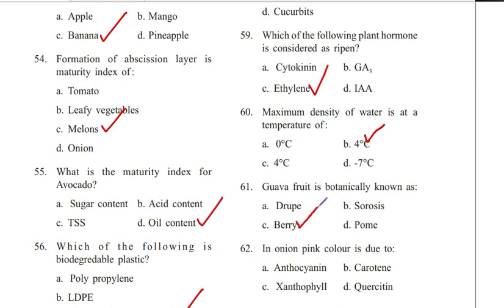Question 62. In onion, pink color is due to: xanthocyanin, erotin, xanthophyll, or percetin. Answer is D. Percetin.